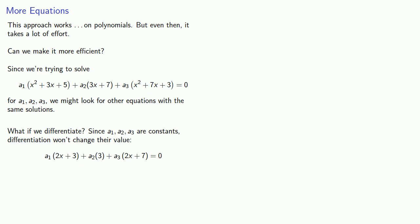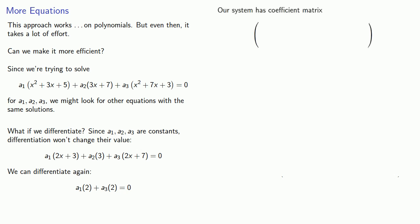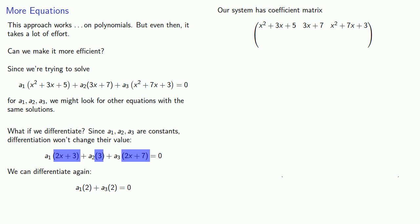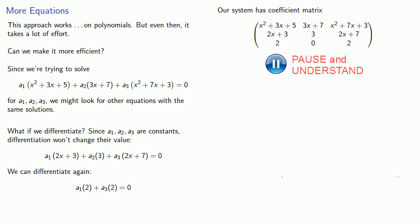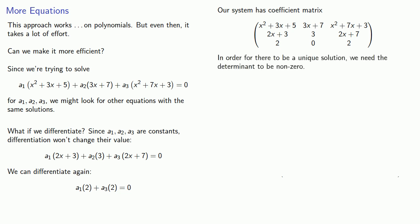Anything you can do once, you can do as many times as you'd like. Differentiating again gives yet another new equation involving a1, a2, and a3. The variables we don't know are a1, a2, and a3, so the coefficients are everything else — the expressions multiplied by a1, a2, and a3 in each equation. This forms our coefficient matrix. We want a unique solution to the original equation, which requires a unique solution to our system, and that happens when the determinant is not equal to zero.